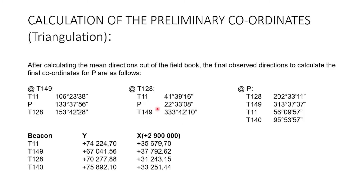Welcome to the channel. Today I'm going to be teaching you how to do calculations of preliminary coordinates using the triangulation method. This method uses your observed directions as well as coordinates to calculate your P value, which is the station you are standing at. In this case you have three stations, but P will be the one you're trying to determine.